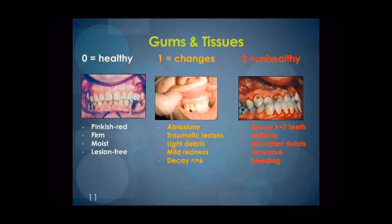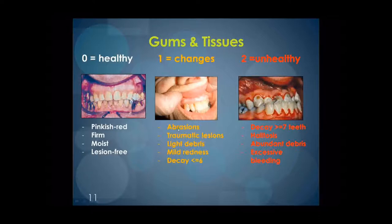Gums and tissues. Healthy gums and tissues should be a continuous pinkish-red color or pigmented in relation to the normal coloration of the client, firm in texture, free of lesions, and moist. The most notable changes in gums and tissues will require referral, but mild changes may respond to in-house treatment and monitoring — this area is a judgment call. Level 1 changes might include abrasion, traumatic lesions, a light buildup of soft debris, or mild redness in gum tissues.